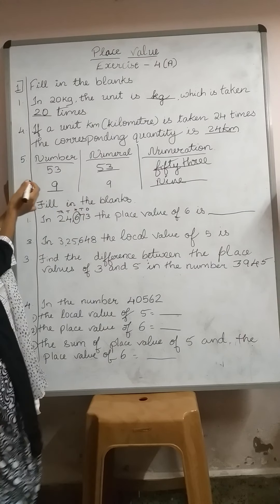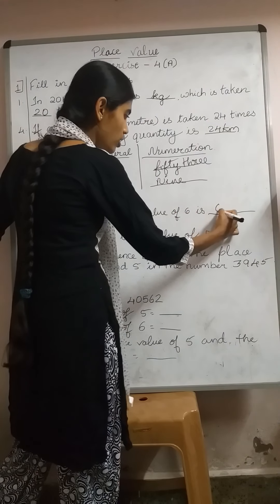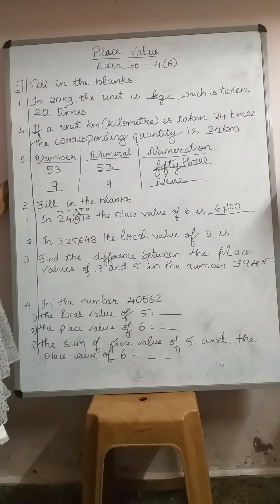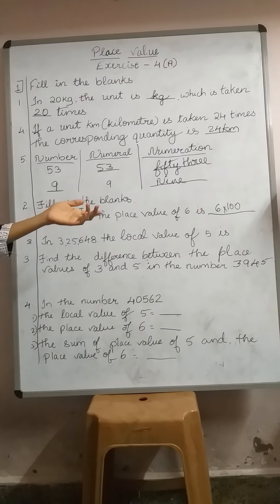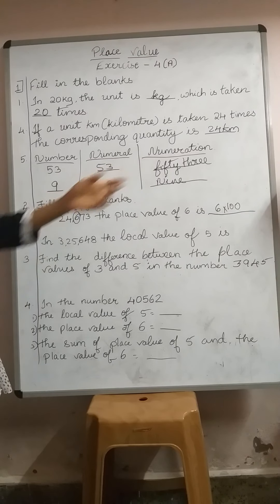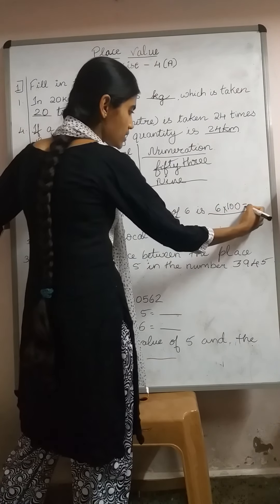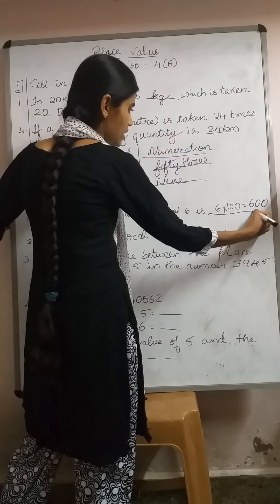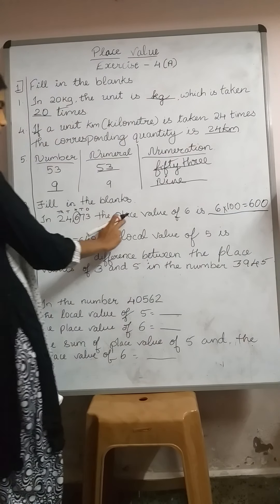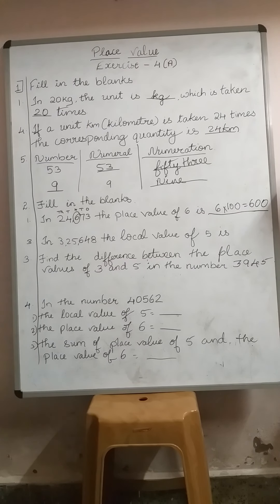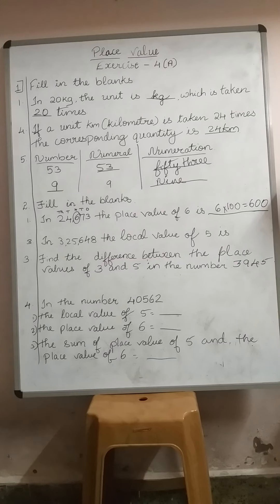If 6 is in the 100's place, the value of 6 is multiplied by 100 — that is 100 times. So 6 times 100 equals 600. The place value of 6 is 600, because 6 is at the 100's place.